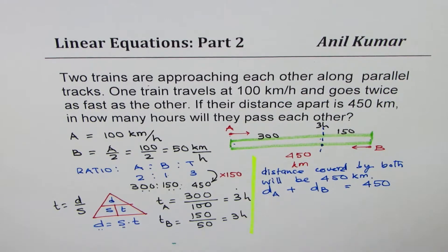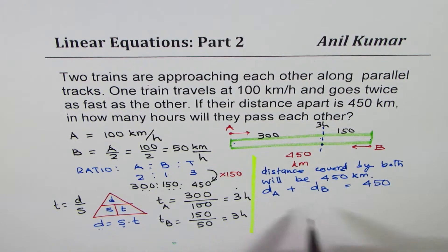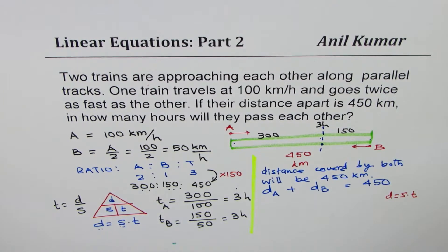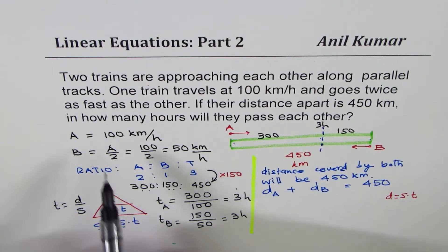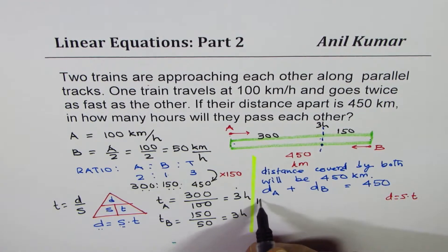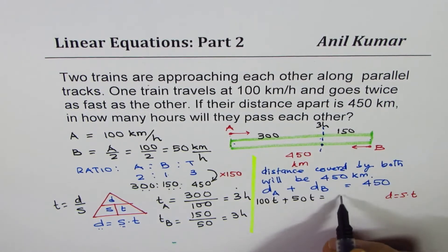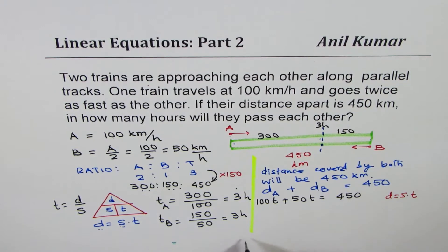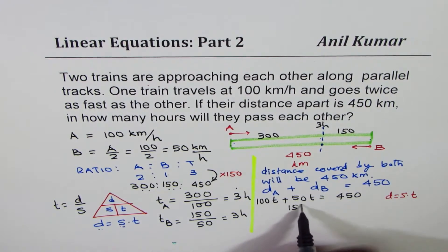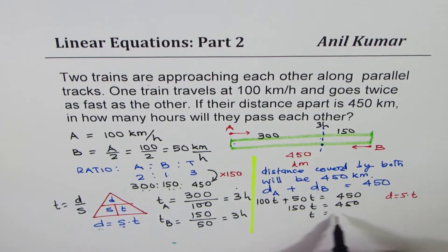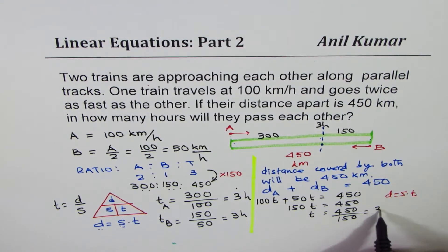Now what is distance equal to? The formula states that distance equals speed into time. Speed into time. So we can write down, distance for A, speed is 100. So it is 100T. For B is 50, 50T equals 450. Or 150, when you add them, T equals 450. T equals 450 divided by 150. So you get 3.